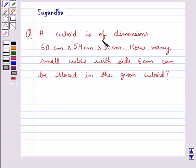A cuboid is of dimensions 60 cm × 54 cm × 30 cm. How many small cubes with side 6 cm can be placed in the given cuboid?